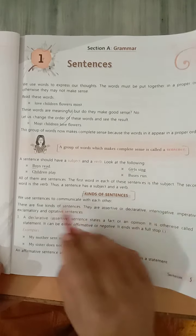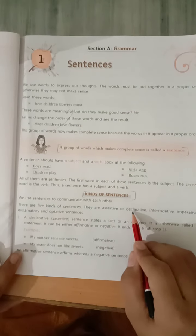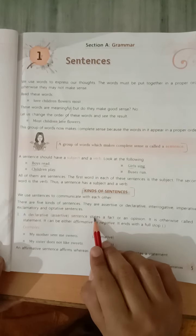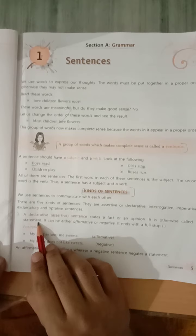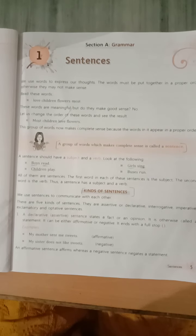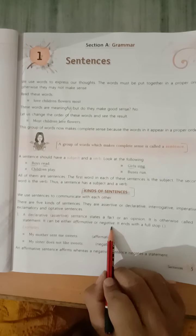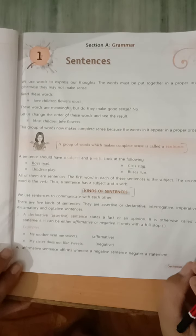How many kinds of sentences are there? Now we'll read. There are five kinds of sentences. They are assertive or declarative, interrogative, imperative, exclamatory and operative sentence. Five types ke sentence hota hai. First declarative sentence. States a fact or an opinion. It is otherwise called a statement. It can be either affirmative or negative. Affirmative bhi ho sakta hai, negative bhi ho sakta hai. It ends with a full stop. This sentence kya hota hai, full stop pe end ho jata hai.